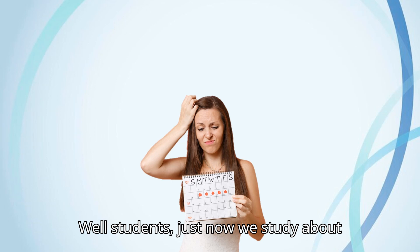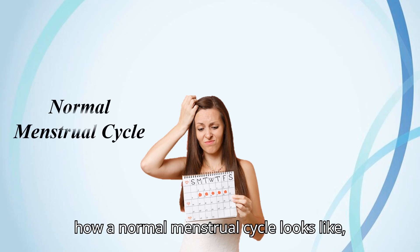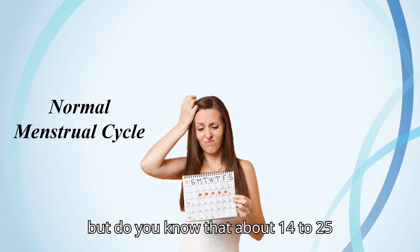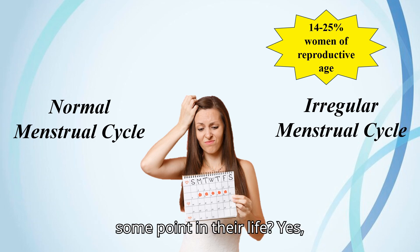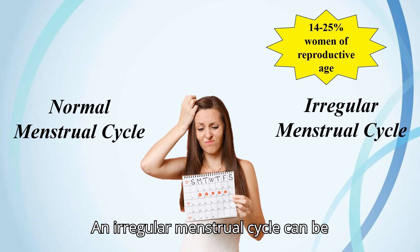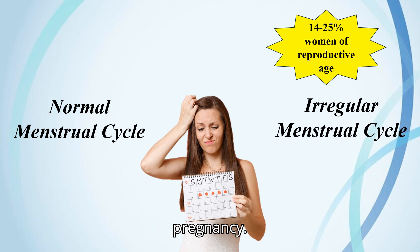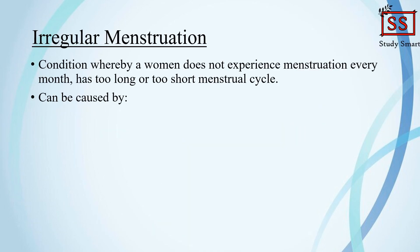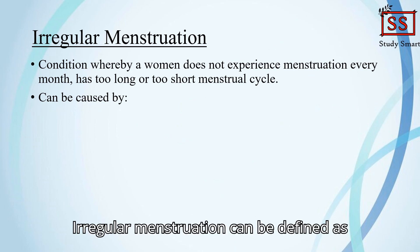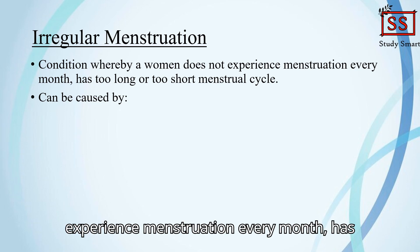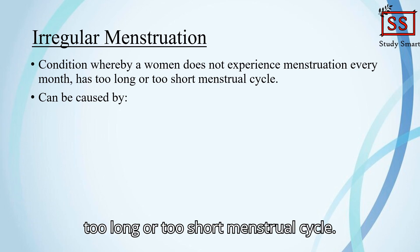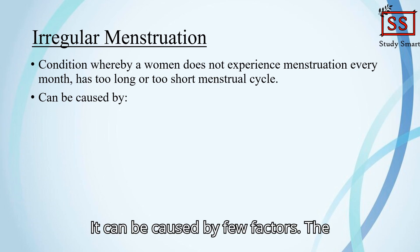Just now we studied how a normal menstrual cycle looks like. But did you know that about 14 to 25 percent of women of reproductive age experience an irregular menstrual cycle at some point in their life? An irregular menstrual cycle can be stressful and reduce the chance of pregnancy. Irregular menstruation can be defined as a condition whereby a woman does not experience menstruation every month, or has too long or too short a menstrual cycle. It can be caused by a few factors.